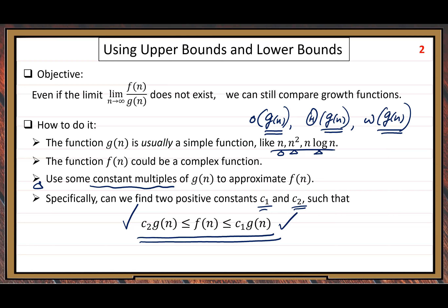Based on this analysis, for case number four, we have a new method: finding upper bounds and lower bounds and getting an appropriate inequality for the description. This method works no matter whether the limit of the ratio exists or not. If it exists, you can still use this inequality method. So when the limit exists, you have two methods.